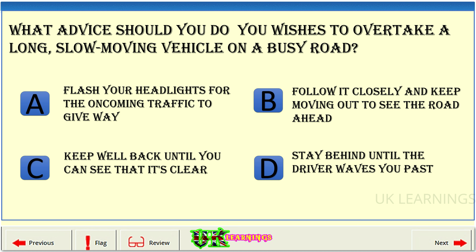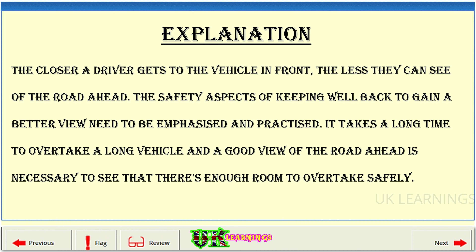What advice should you follow if you wish to overtake a long, slow-moving vehicle on a busy road? A: flash your headlights for the oncoming traffic to give way. B: follow it closely and keep moving out to see the road ahead. C: keep well back until you can see that it's clear. D: stay behind until the driver waves you past. The correct answer is C: keep well back until you can see that it's clear. Explanation. The closer a driver gets to the vehicle in front, the less they can see of the road ahead. It takes a long time to overtake a long vehicle and a good view of the road ahead is necessary to see that there's enough room to overtake safely.